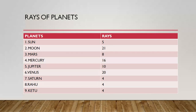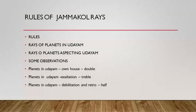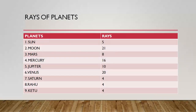To use these rays you need certain rules. We cannot take rays of all planets — only rays of planets in udayim and rays of planets aspecting udayim. There are further conditions: if there are no nodes, double it; if it is in exaltation, triple it; if it is in debilitation or retrograde, halve it. For example, if Sun is exalted you take 10, but if it is debilitated you take 2.5. Sun cannot be retrograde, but this applies to other planets.